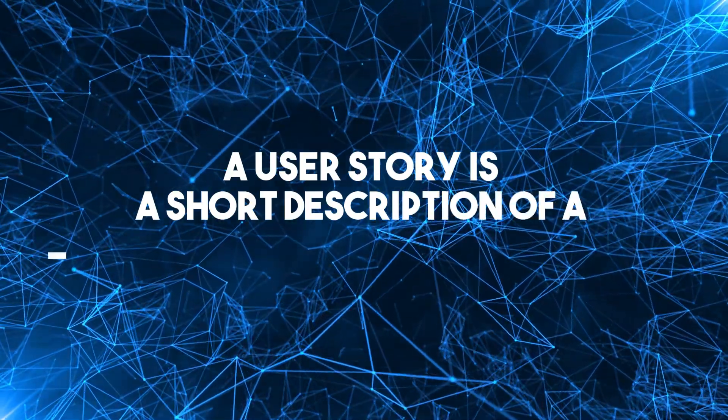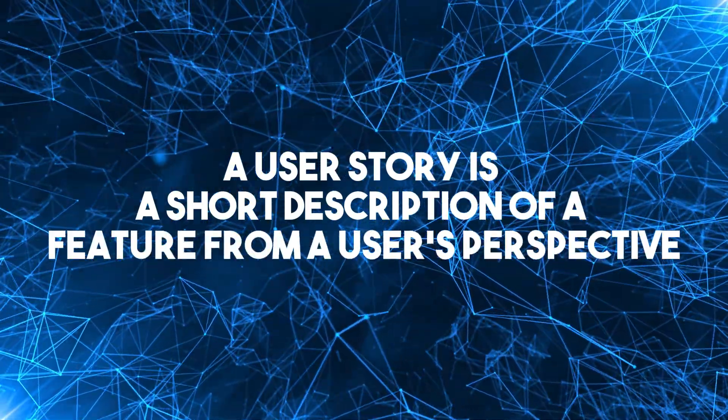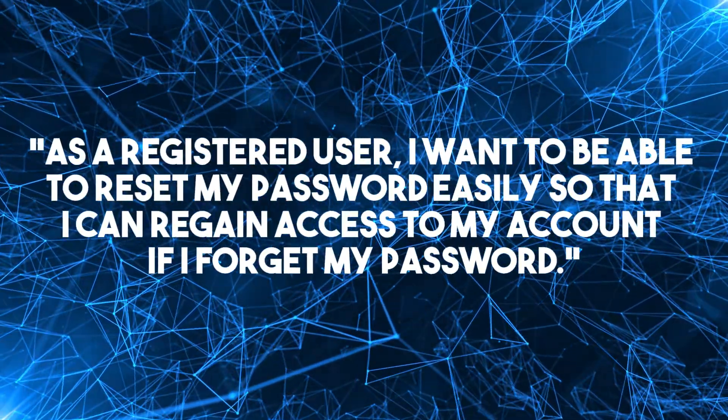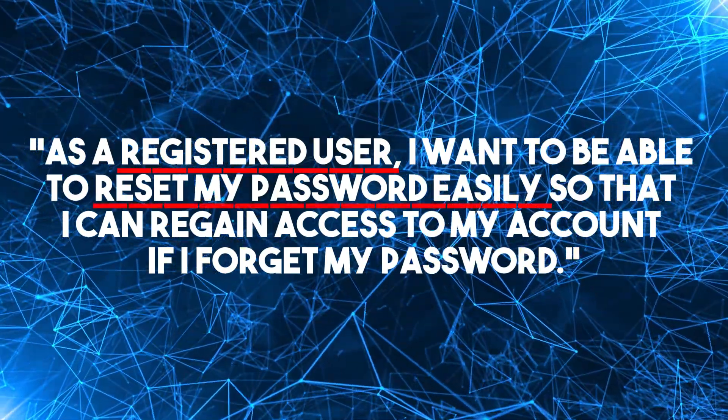A user story is a short description of a feature from a user's perspective. In agile software development, user stories describe the requirements the software must deliver. A user story consists of persona, action, and outcome. Simple enough. But each function gets its own user story, and there can be a lot of stories depending on the app. If you write everything from scratch, user stories can take days to work out because you're constantly trying to put yourself in the user's shoes. Stories on Bot can turn this vital but time-consuming step into just a vital step.